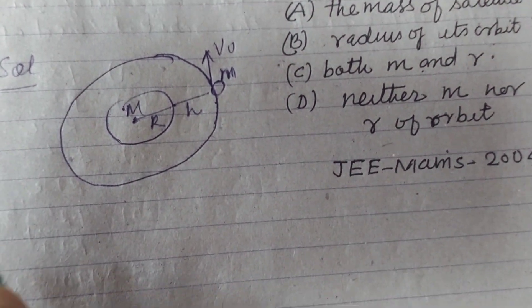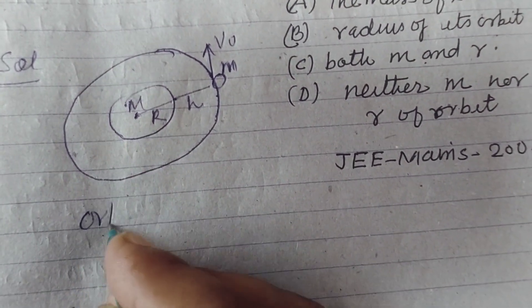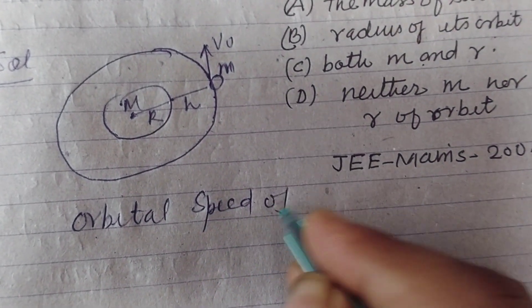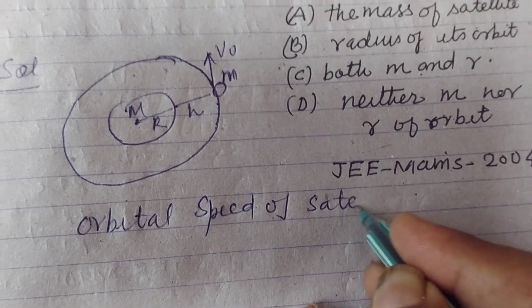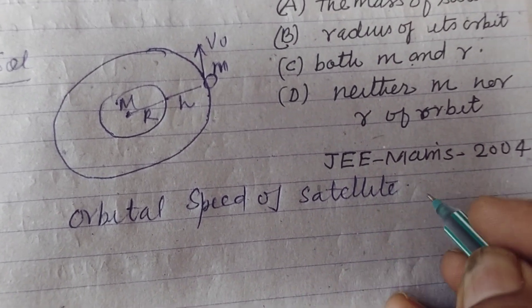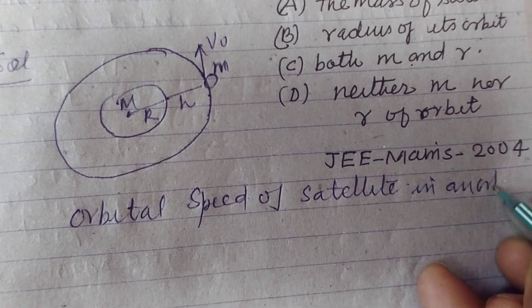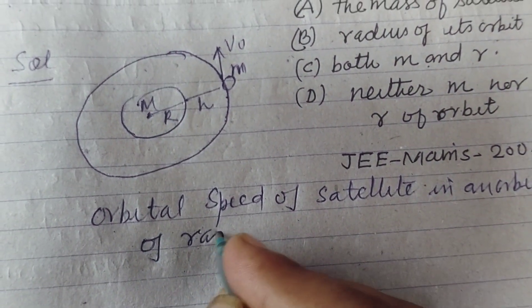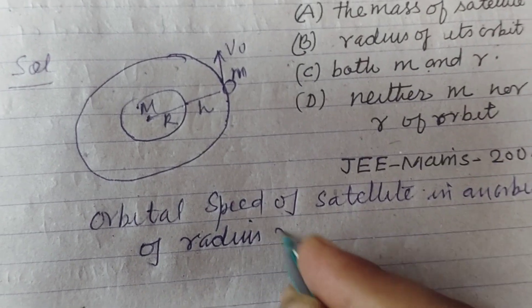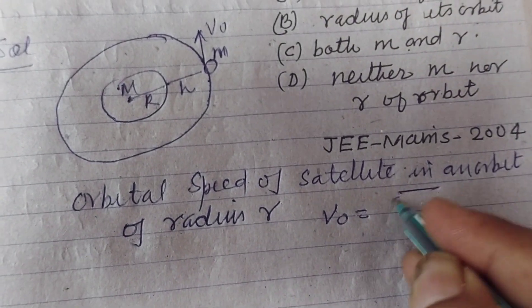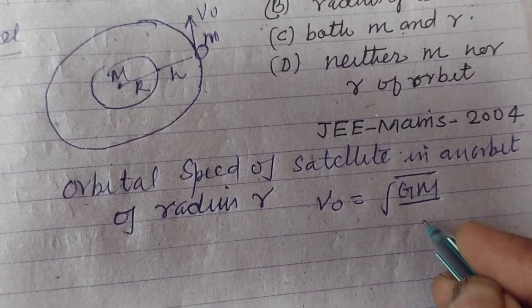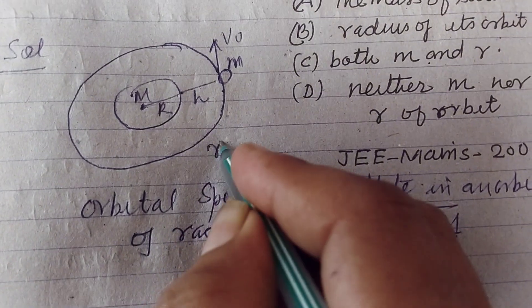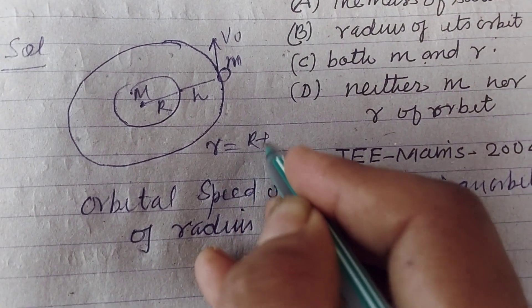So you know that orbital speed of a satellite in an orbit of radius r is v₀ equals square root of GM upon r. Here r will be R plus h.